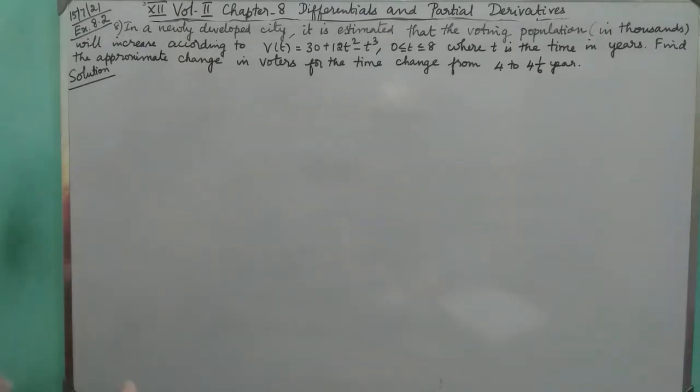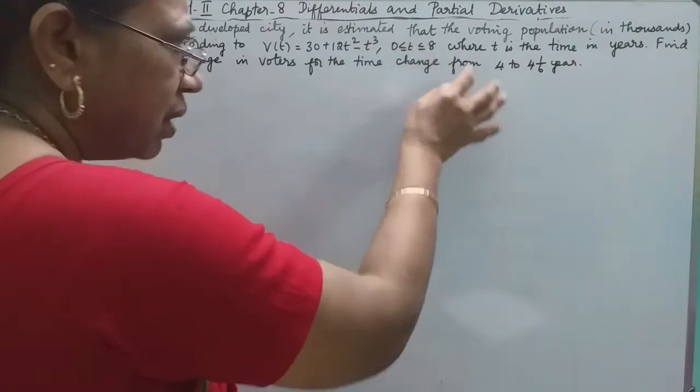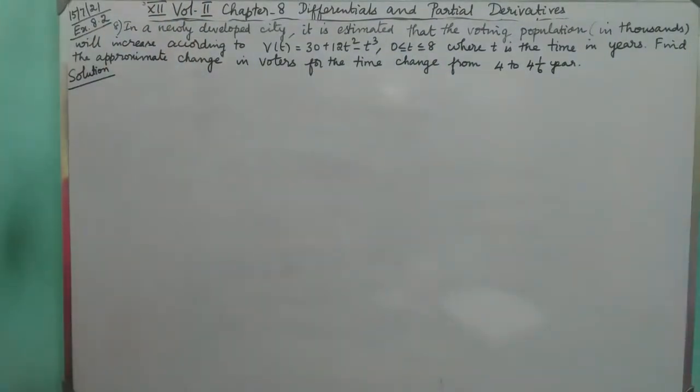Hello students, now exercise 8.0 sum number 8. In a newly developed city, it is estimated that the voting population in thousands will increase according to V(t) = 30 + 12t² - t³, where 0 ≤ t ≤ 8, where t is the time in years. Find the approximate change in voters for the time change from 4 to 4 and 1/6 years.